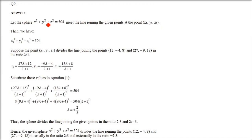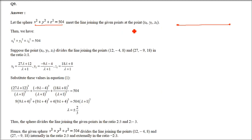Find the ratio in which the sphere x² + y² + z² = 504 divides the line joining the points (12, -4, 8) and (27, -9, 18). So what is given here? First of all we have a line and there is a sphere. Assume that one point of this line is inside the sphere and one is outside. That is, the line will have a point intersecting with the sphere, and that intersection point divides the line into a certain ratio.